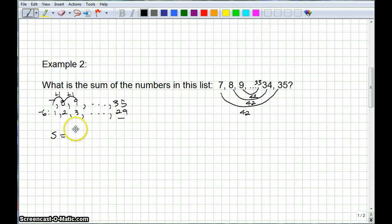The sum is equal to 7 plus 8 plus 9 plus dot dot dot all the way up to plus 35. And we could write that sum in the reverse order, and we would have 35 plus 34 plus 33 plus dot dot dot plus 7. Same sum, just a different order. So, we can add those up. We get 42 plus 42 plus 42 plus dot dot dot all the way up to 42.